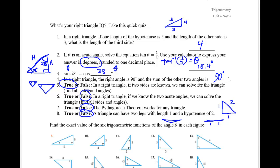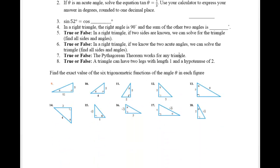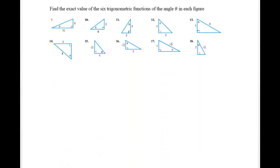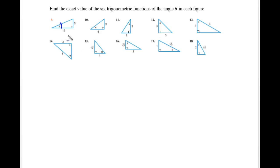For the following problems, we're going to find the exact value of six trigonometric functions. Each problem requires finding a missing side using the Pythagorean theorem, then computing all six trig functions based on angle theta. Note that theta's position moves, which changes the six trig functions from that perspective. It's important to know SOHCAHTOA — the relationship between sine, cosine, and tangent — which is also useful for the three reciprocal functions: secant, cosecant, and cotangent. Let's dig in and find the missing hypotenuse.